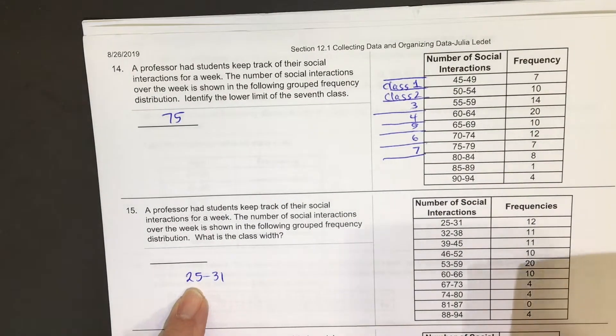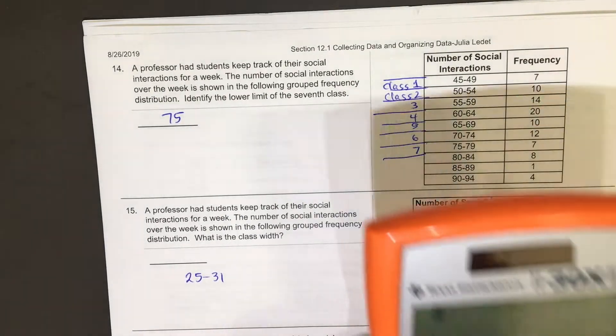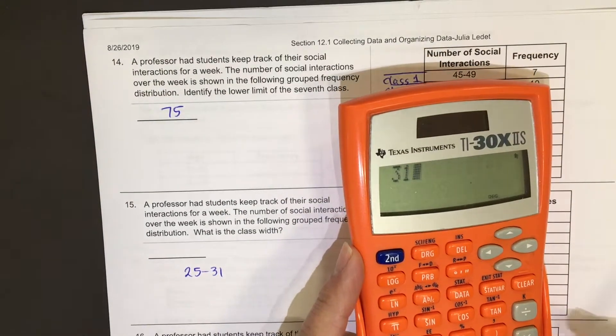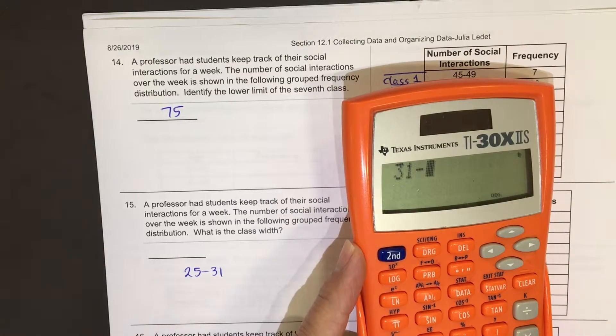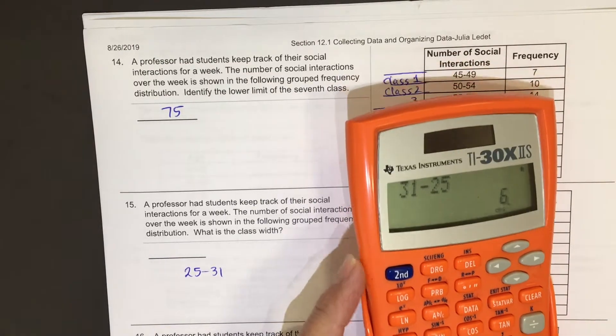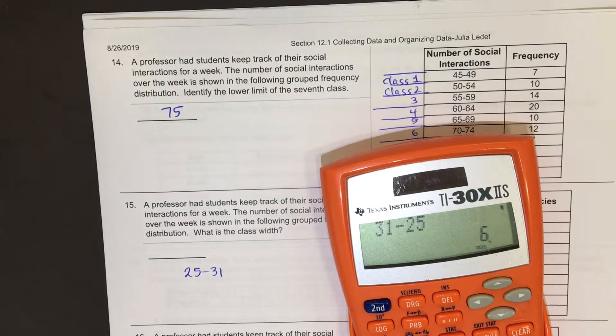Well, I think I said it wrong. 31 minus 25, that will not get the right answer. 31 minus 25 is 6. That is not the class width.